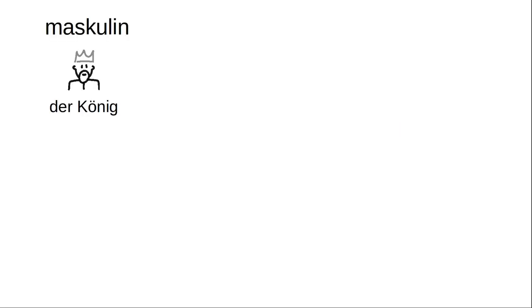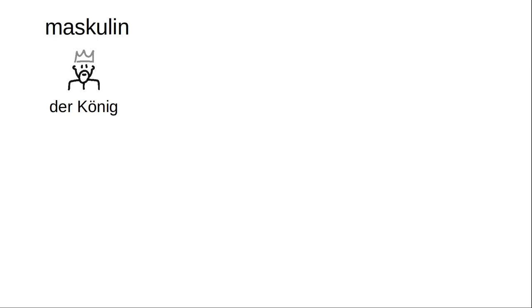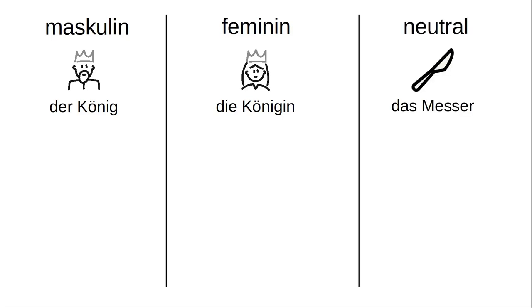For example, a masculine noun such as 'the king' uses 'der König'. For feminine, as in 'the queen', it's 'die Königin'. And for neuter, as in 'the knife', it's 'das Messer'.